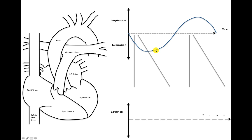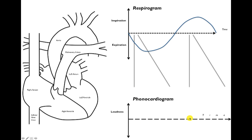We've drawn our respiratory curve, and what we're going to start with for S2 — because I think it makes more sense — is actually expiration, the out-breath, and then the in-breath. On the top is the respirogram and the bottom is the phonocardiogram, and we're going to blow up two specific areas. That's how we're going to lay things out.